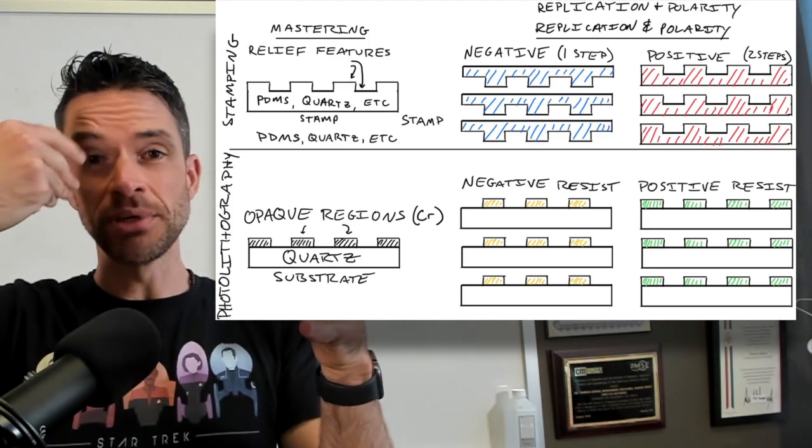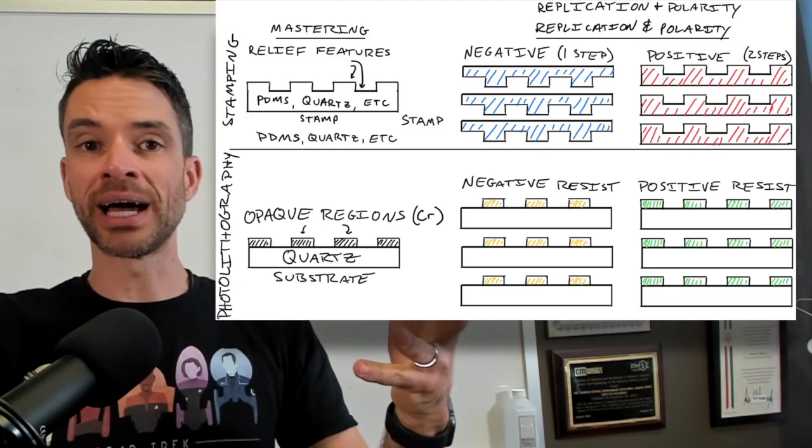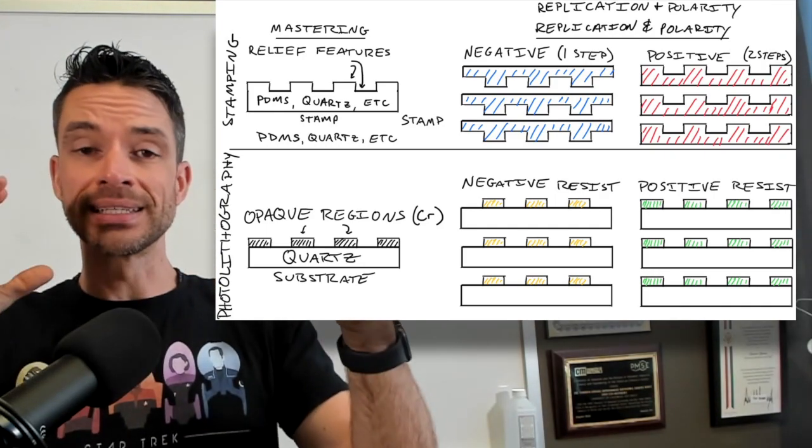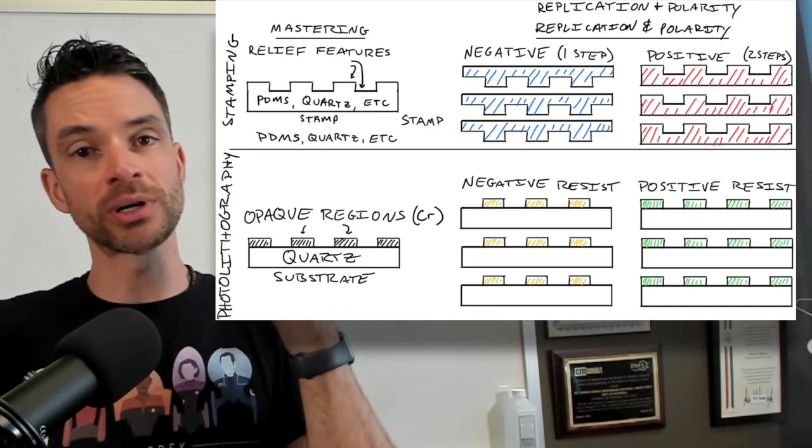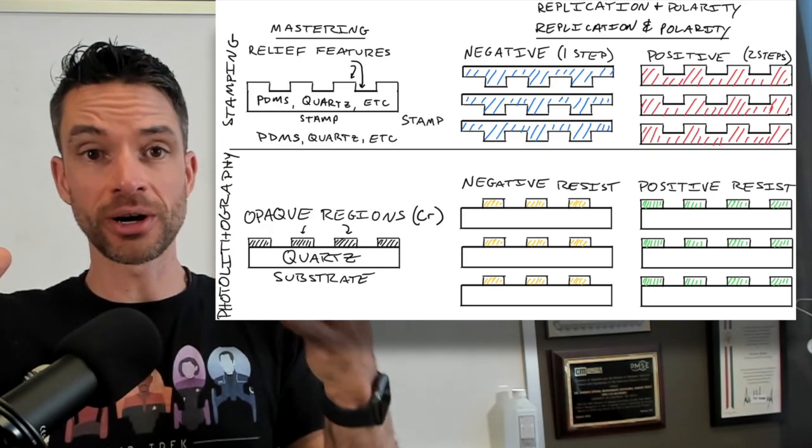And those patterns can be washed away with some solvent developer solution. And then you can use that pattern either in its topographic manner as a stamp, literally a stamp, but much more commonly it's used to master a photo mask for photolithography.